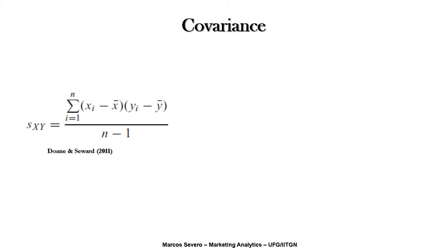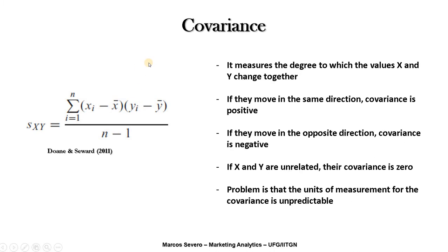This is the basic formula of covariance. The first thing to observe is that it is the multiplication of the dispersion of two variables. In this first part of the equation I have given observations of an X variable minus its mean — measuring how X varies regarding its mean — and I'm multiplying this by how Y varies regarding its mean. Covariance measures the degree to which X and Y change together. If they move in the same direction, covariance is positive. If they move in the opposite direction, covariance is negative. If X and Y are unrelated, their covariance is zero. But the problem is that the units of measurement for covariance are unpredictable.